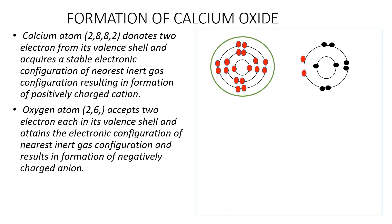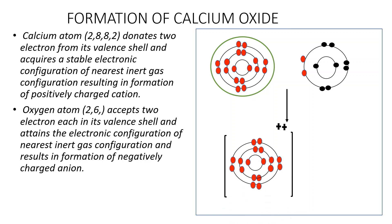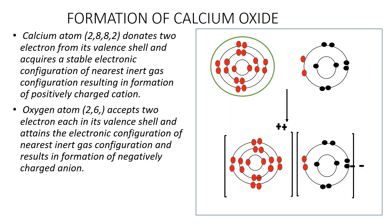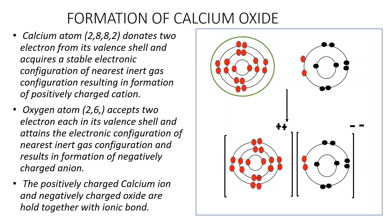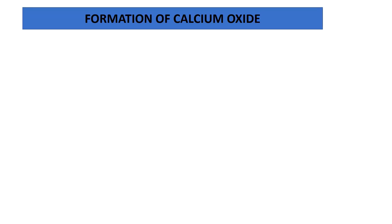There is a transfer of electrons from calcium to oxygen. The calcium atom, by losing electrons, gets converted into a positively charged calcium ion. Let us now see the electron dot diagram for the formation of calcium oxide. I have a calcium atom with two electrons in its outermost shell, shown with two dots.